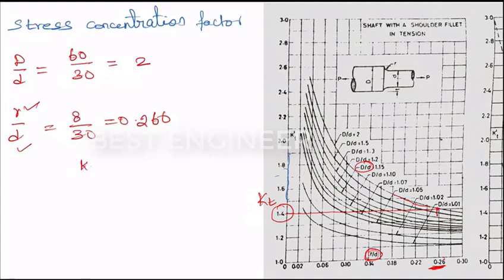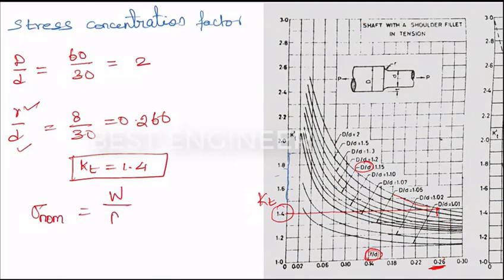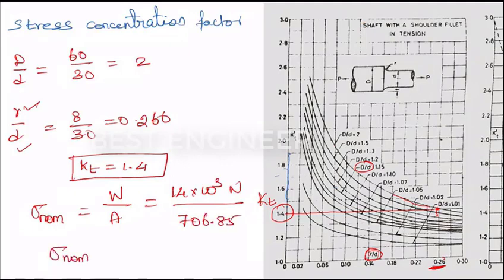So the stress concentration factor kt equals 1.4. Now let's find the nominal stress. Nominal stress equals load divided by area: 14 × 10³ newtons divided by 706.85 millimeters squared. So nominal stress is 19.8 Newton per millimeter squared.